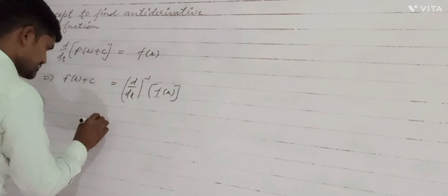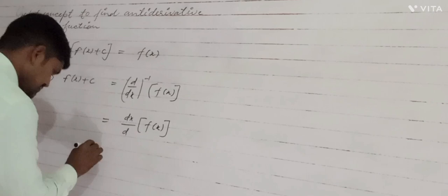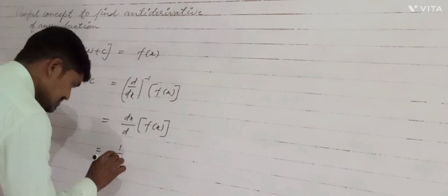It can be written as dx over d of f(x), also written as 1 by d/dx of f(x).